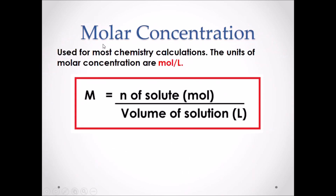The most important concentration measurement is molar concentration, used for most chemistry calculations. The units are moles per liter, so the formula is the number of moles of solute divided by the overall volume of solution in liters. After this lesson, we will only focus on molar concentration — you will use it for the remainder of Chemistry 20 and in Chemistry 30.